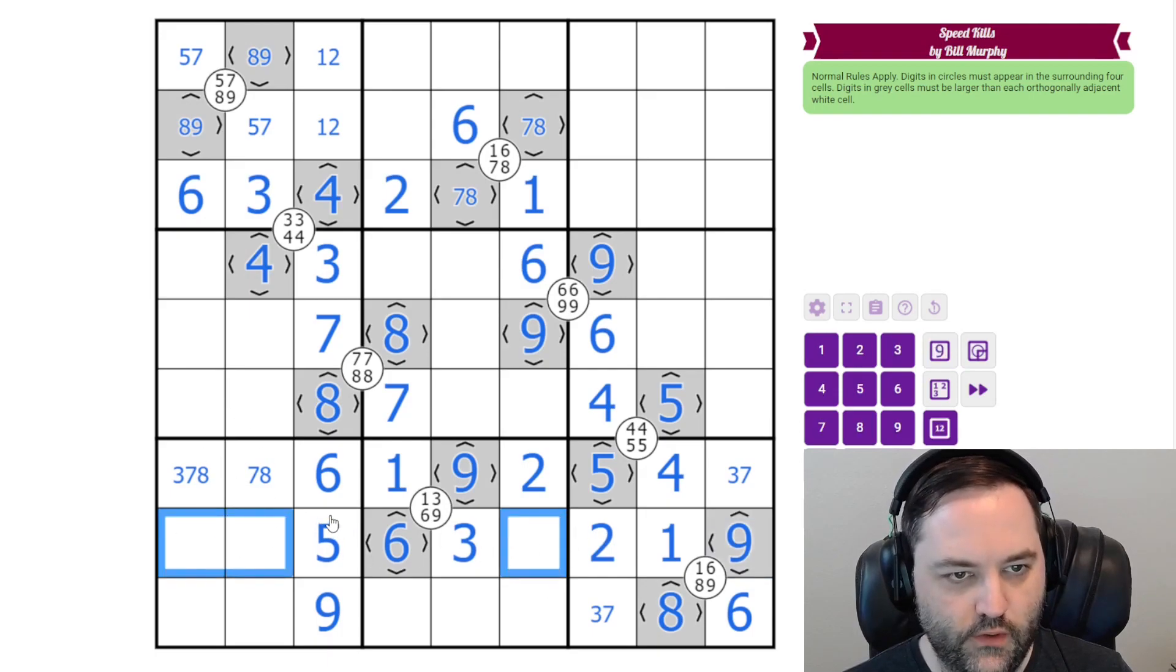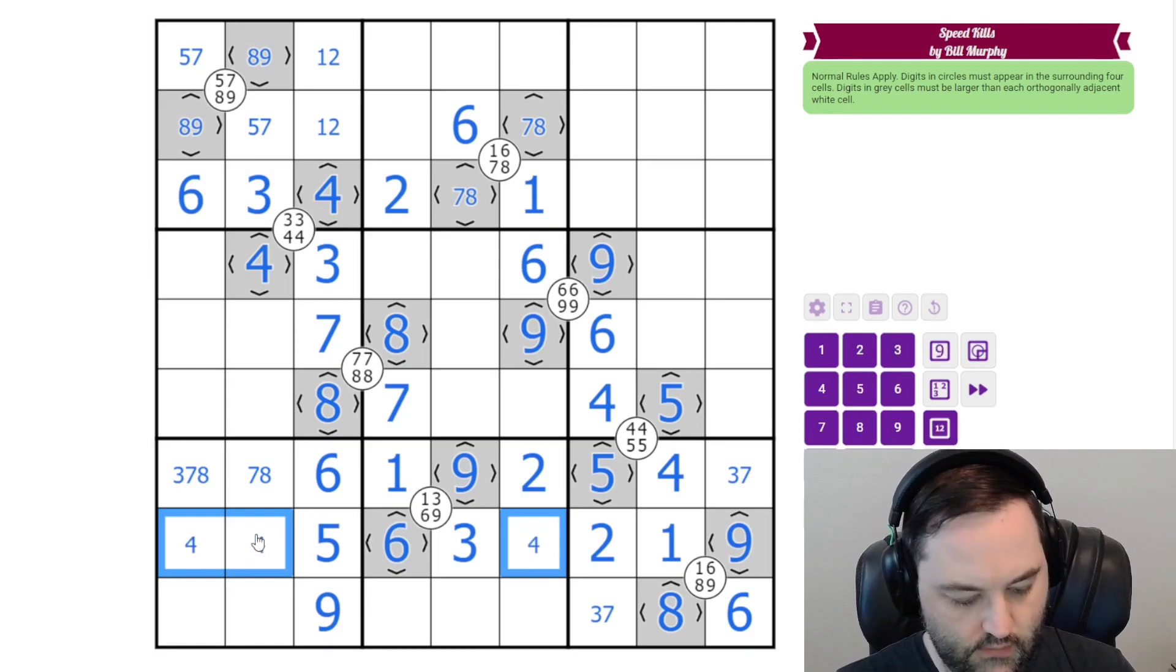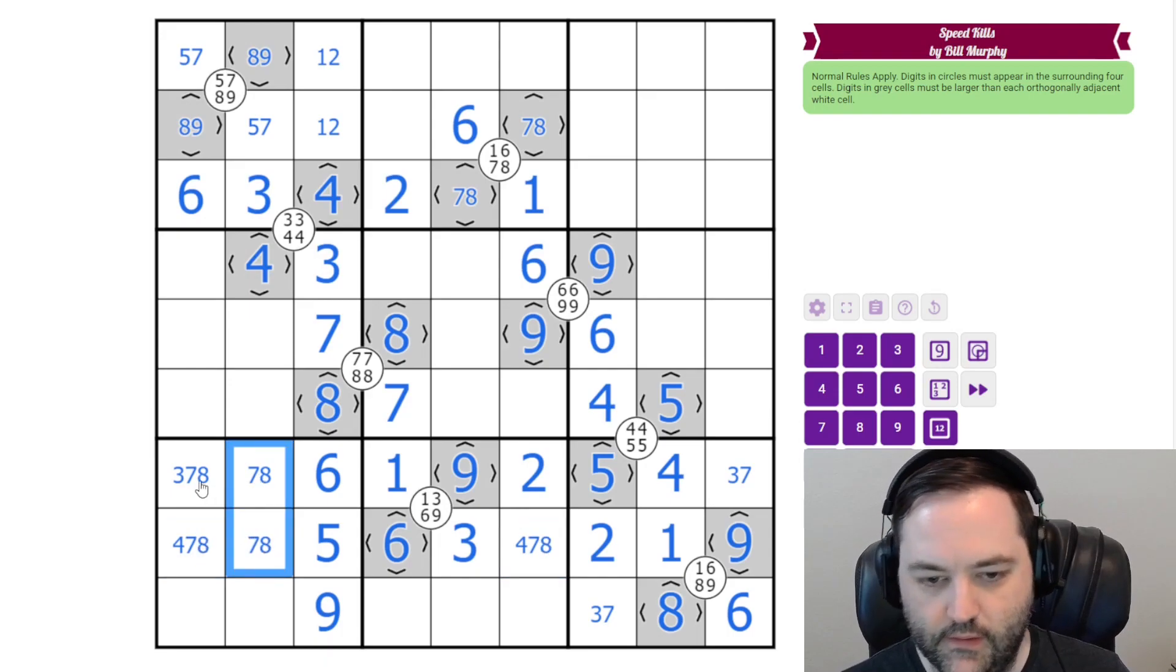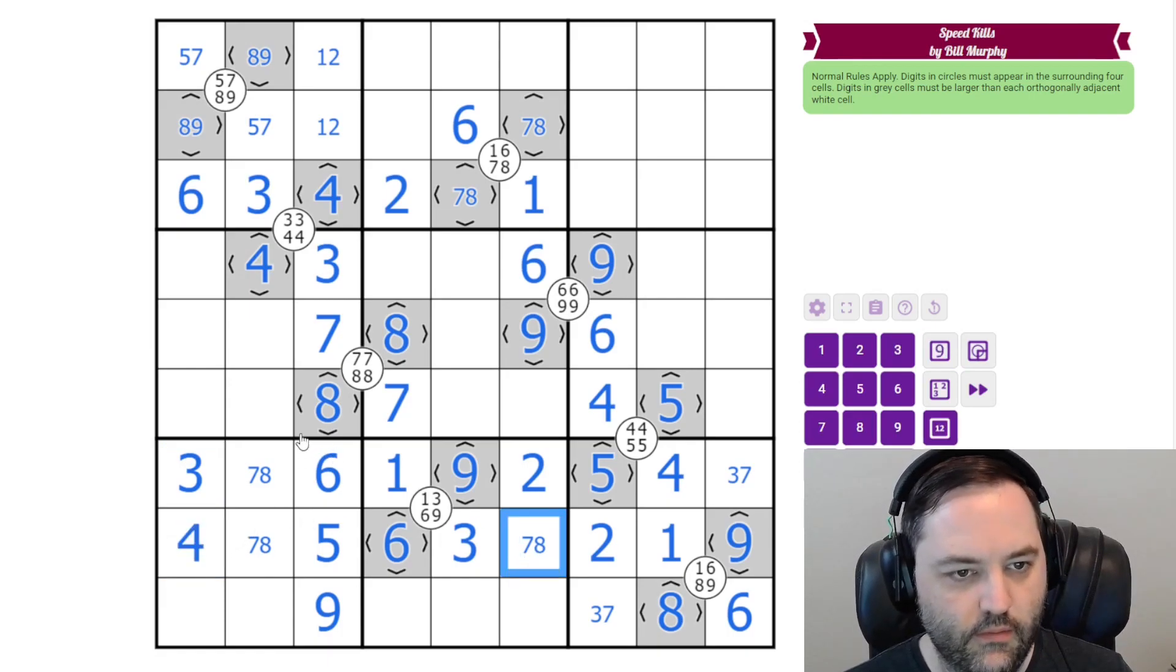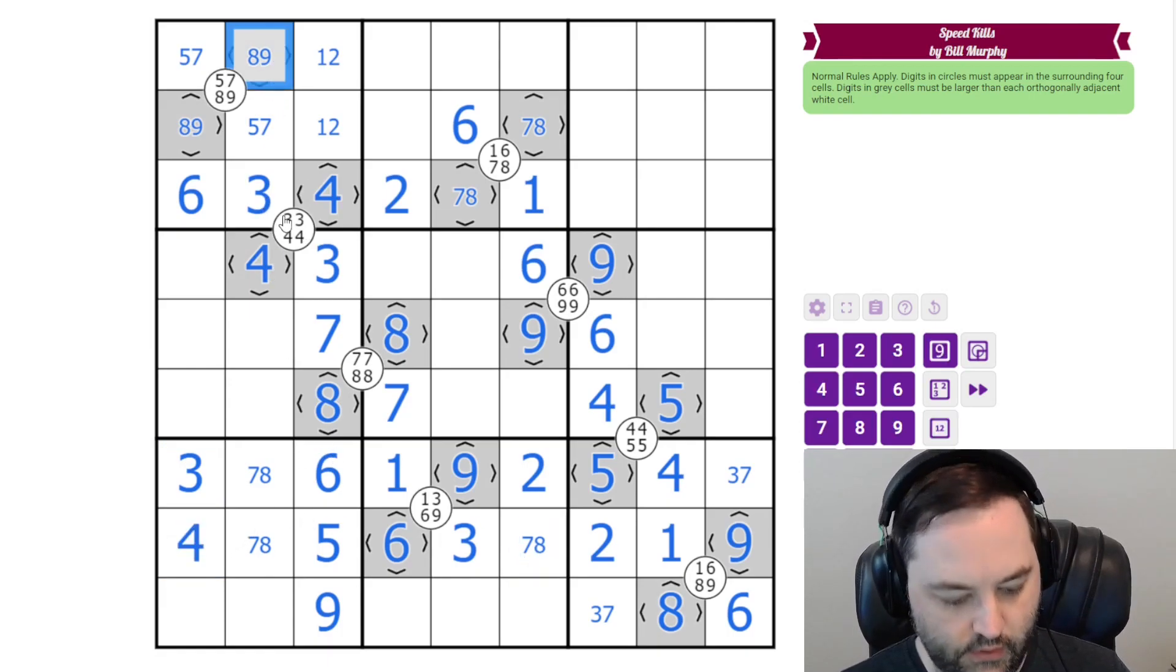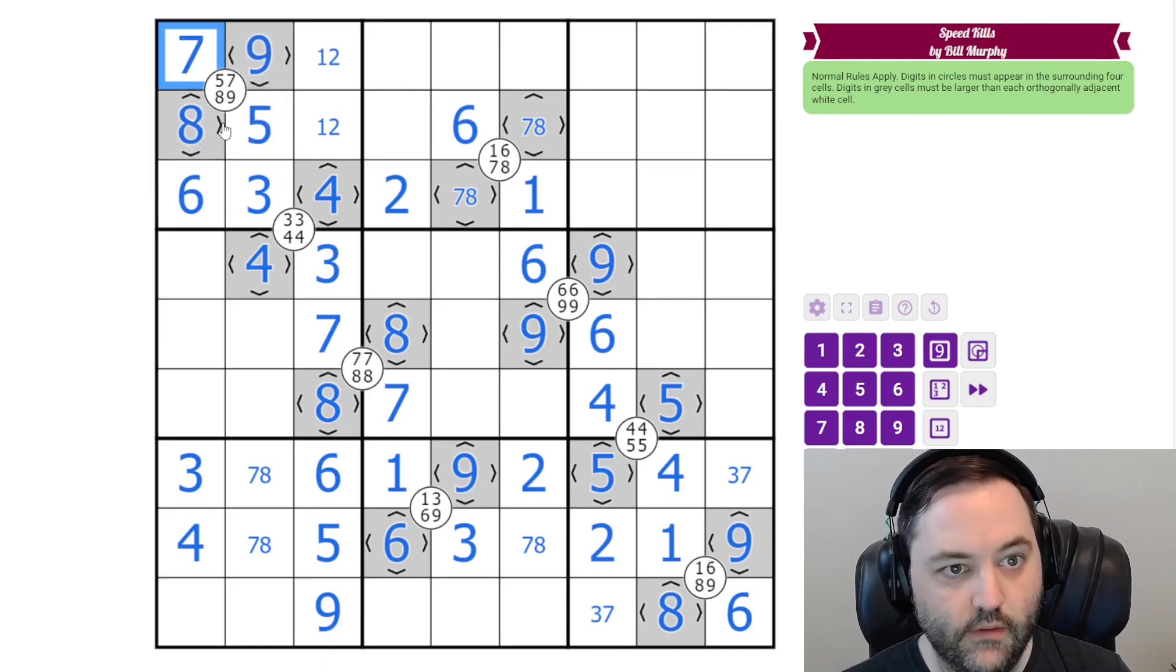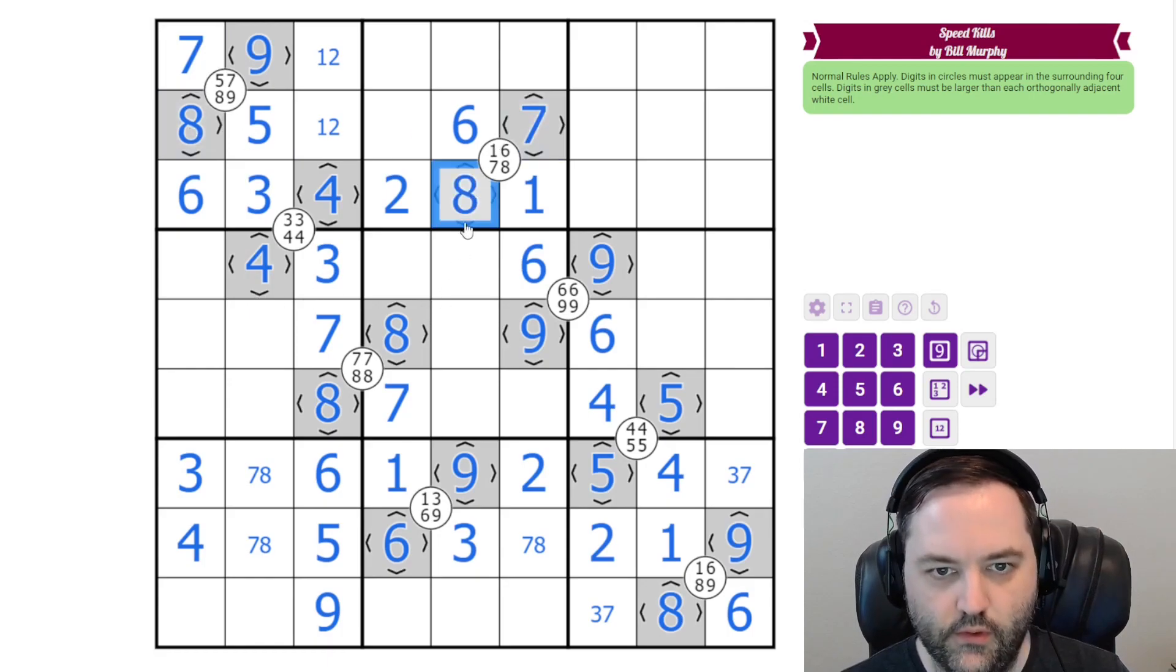Here we need 4, 7, and 8 in some order. If that one's not 4, that gives us a 7 and 8 pair in this column. And so we have 3 and 4 here. It's not 4. 7 and 8 also looks up here to give us 9 and 8, and 5 and 7.